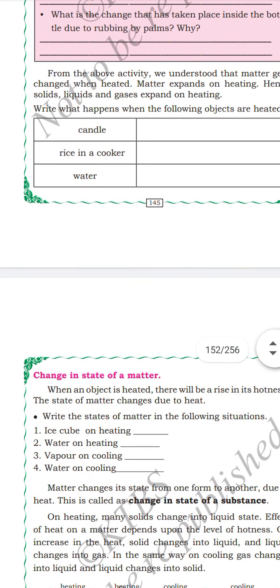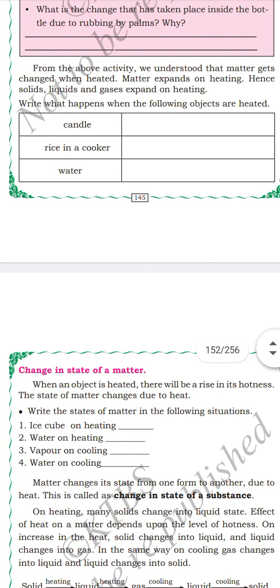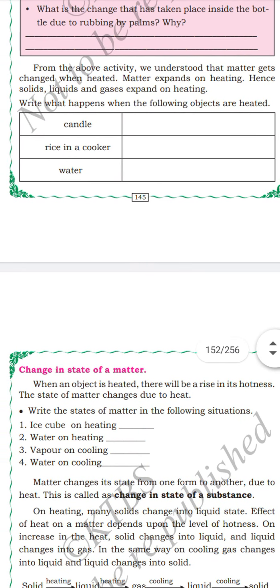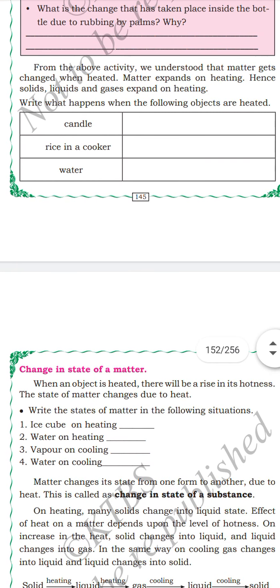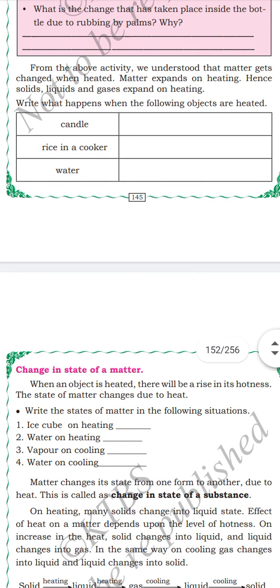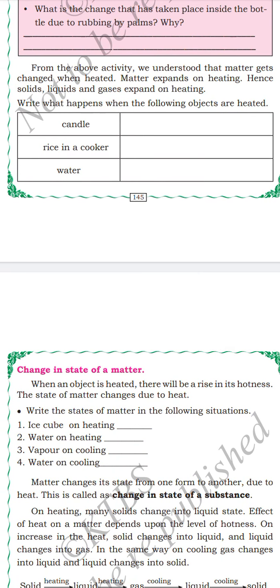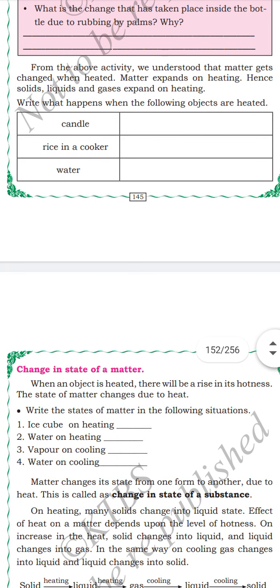Change in state of matter. When an object is heated, there will be a rise in its hotness. The state of matter changes due to heat. Matter changes the state from one form to another due to heat. It's called change in state of a substance. On heating, solids change into liquid.